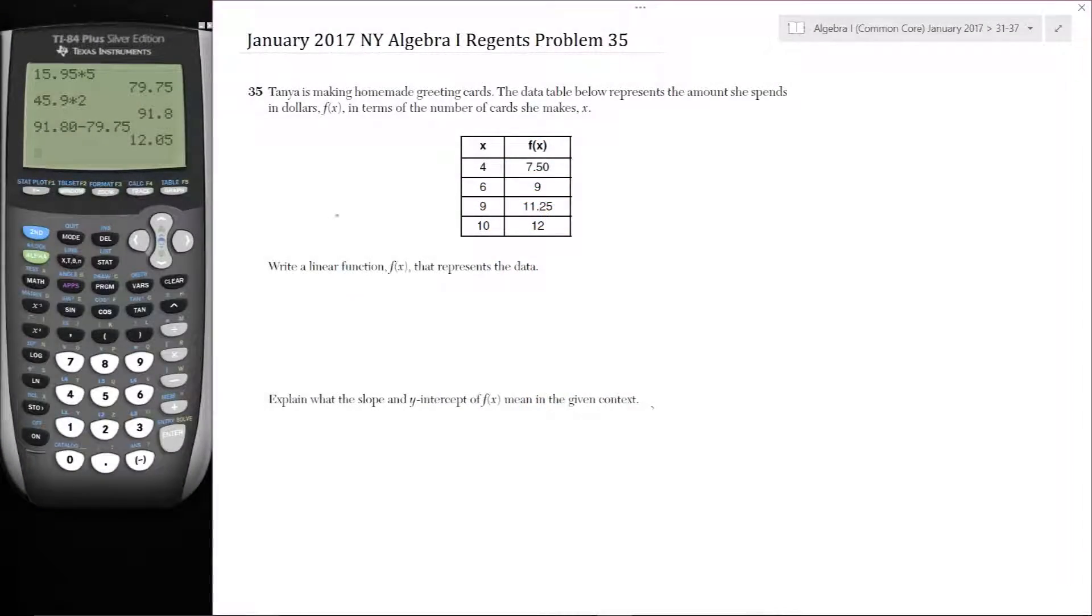Here's problem 35. Tanya is making homemade greeting cards and the data table below represents the amount that she spends in dollars, F, in terms of the number of cards that she makes, X. So this is cards, this number of cards, and this is the amount she spends.